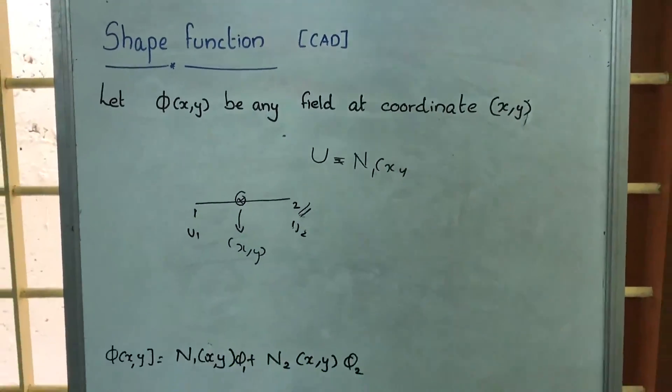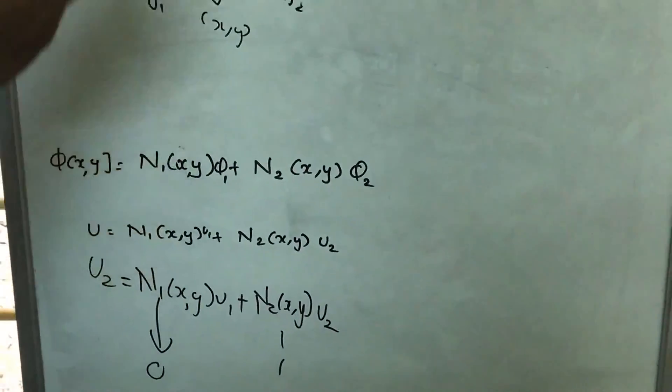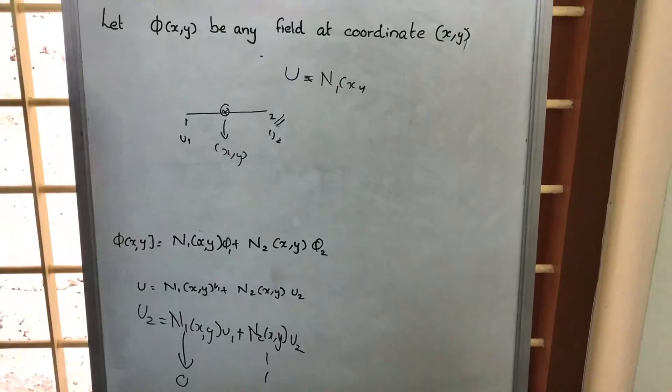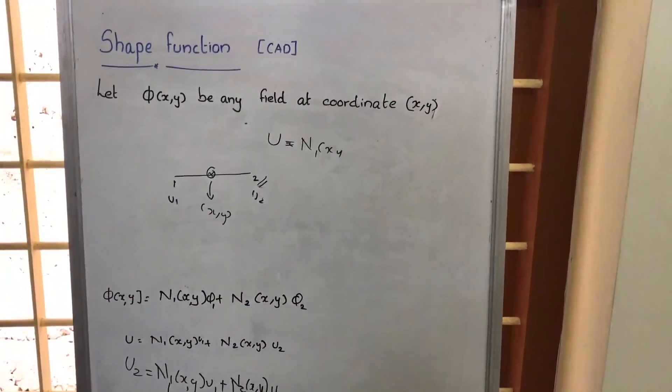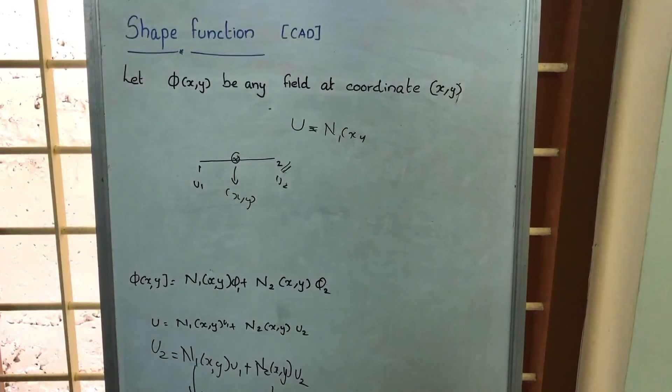So the properties are: at a particular node, the function corresponding to it will be having a value unity and all other values will be 0. So that is the basic explanation for this shape function.